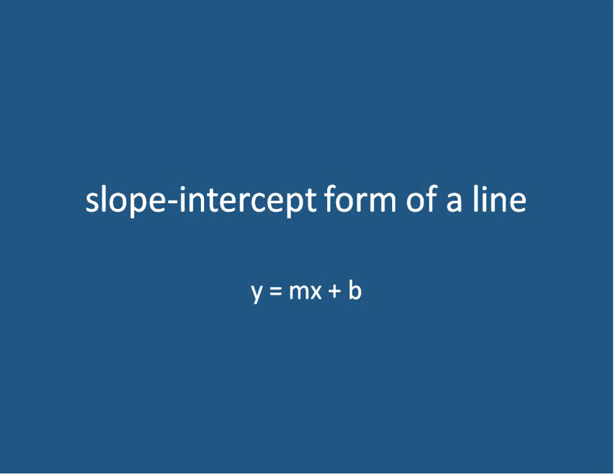Hello, this is Mr. Buffington. We're going to be looking at the slope intercept form of a line today, often known as y equals mx plus b. This is our slope intercept form of a line.